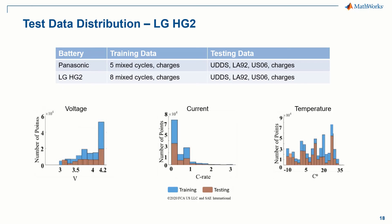Each battery was tested with many different drive cycles. A portion of these cycles were used for training the SOC estimation algorithm, and the remainder were used for testing the accuracy of the algorithm. For the Panasonic cell, five mixed drive cycles made up of randomized portions of other drive cycles were used for training, and the standard urban UDDS cycle, LA92 cycle, and the more aggressive USO6 cycle were used for testing. For the LG HG2 battery, eight mixed cycles were used for training, and the same cycles were used for testing. The histograms show that the training and testing cycles cover the whole voltage range of the battery from around 3 to 4.2 volts, and cover temperatures from negative 10 to about 30 degrees C. The training and testing data both cover the operational space well, which is important for thorough training and evaluation of the neural network algorithm.